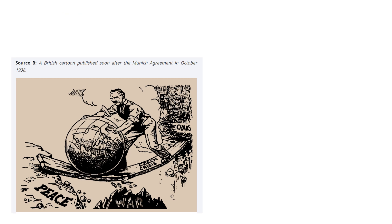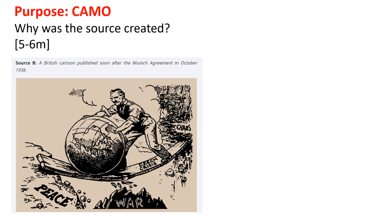Now we are going to look at purpose and how to answer a purpose question. The purpose question can look like: 'Why was the source created?' or 'What was the purpose of the source?' Purpose questions can be as high as six marks or five marks. In terms of formula to help you unpack your ideas, it is using CAMO — Creator, Audience, Message, as well as Outcome. Outcome is: when the audience sees this particular source, what do you think they would think about, and how would they react?